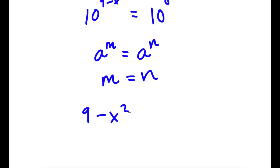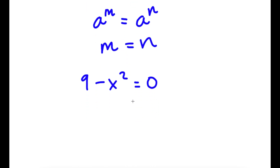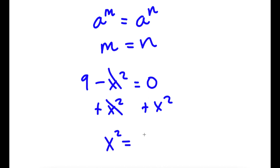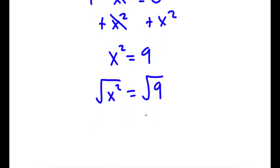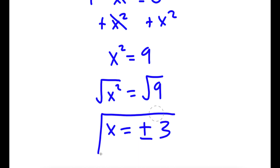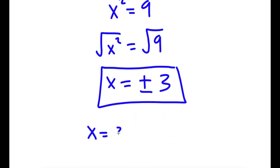So I have 9 minus x squared is equal to 0. We have a simple equation to solve. I'm going to add x squared on both sides — these cancel out — so x squared is equal to 9. Taking the square root on both sides, the square root of x squared is x, and the square root of 9 can be positive or negative 3. So my two solutions are x equals 3 and x equals negative 3.